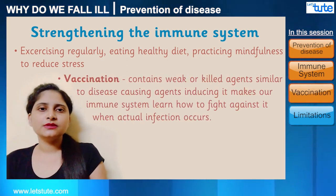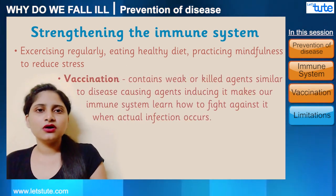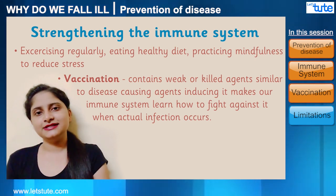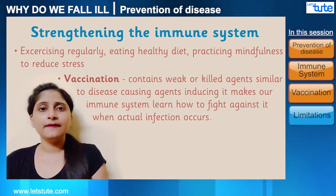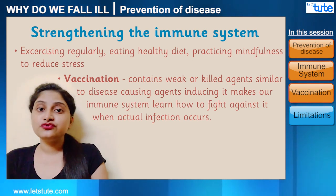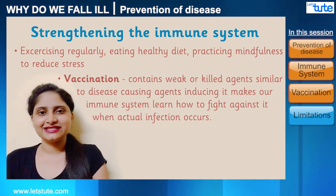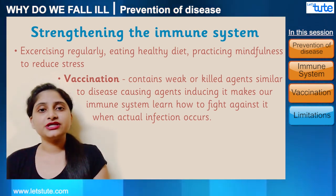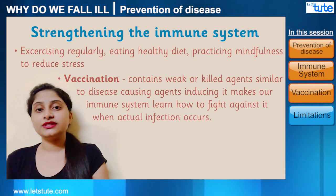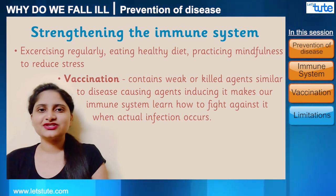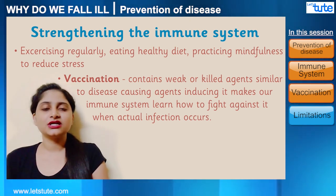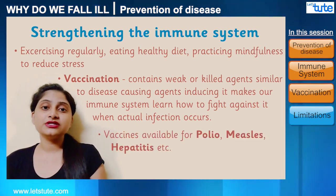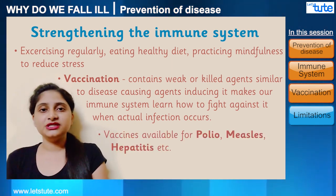A vaccine contains agents similar to the causative agent in a weak or inactive form. Introducing it into the body makes our immune system learn how to fight against it, protecting us from the disease when the actual disease-causing agent enters our body. Today, vaccines are available for different diseases like polio, measles, hepatitis, etc.